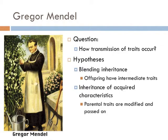At the time, there were two hypotheses that had been formulated to answer this. Blending inheritance claimed that the traits observed in the mother and father blended together to form the traits of their offspring. As a result, the offspring's traits would be intermediate to the mother's and father's traits. So if a black sheep and a white sheep mated, this hypothesis would predict that gray sheep would always come out as the offspring. The Hypothesis of Inheritance of Acquired Characteristics claimed that traits present in parents are modified through use and passed on to the offspring in the modified form. This hypothesis would suggest that the reason giraffes' necks lengthened is because they stretch them and then pass off that trait to their offspring.